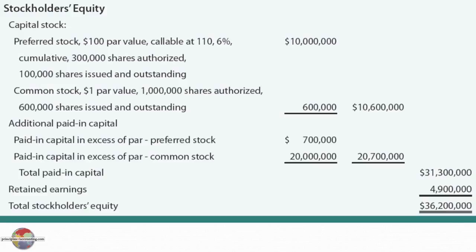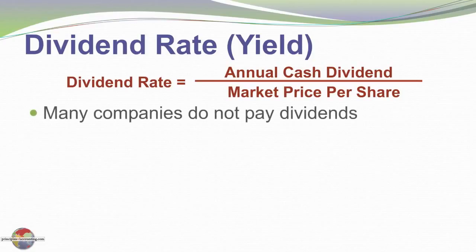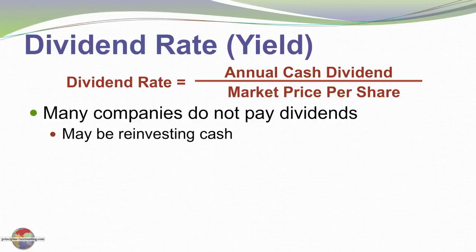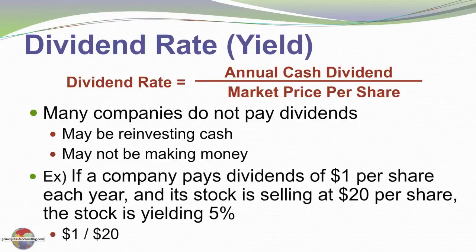The calculations are shown in the textbook. The dividend rate is the annual cash dividend divided by the market price per share. Some companies do not pay dividends — they choose to reinvest in new money-making ventures, or they may not be profitable. But dividend-paying companies are often valued based on their dividend rate. If a company pays $1 per share each year and the stock is selling for $20 a share, we would say it has a 5% yield.